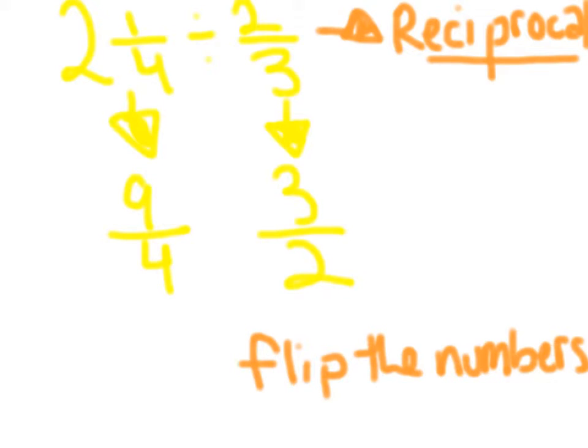So as you saw, we made the 2 and 1 fourths into 9 fourths. And then you have to make the 2 thirds into a reciprocal, which means you have to switch the numerator into the denominator and the denominator into the numerator. And that is called the reciprocal, which basically means to flip the numbers.